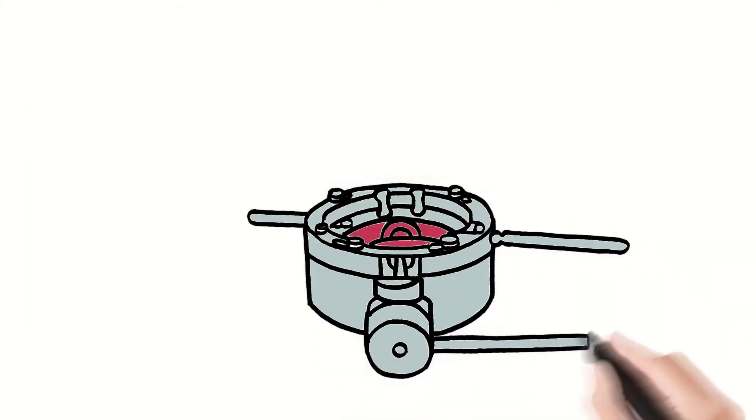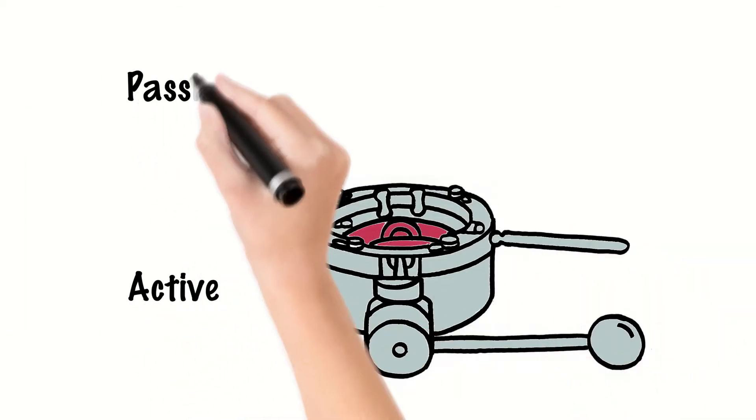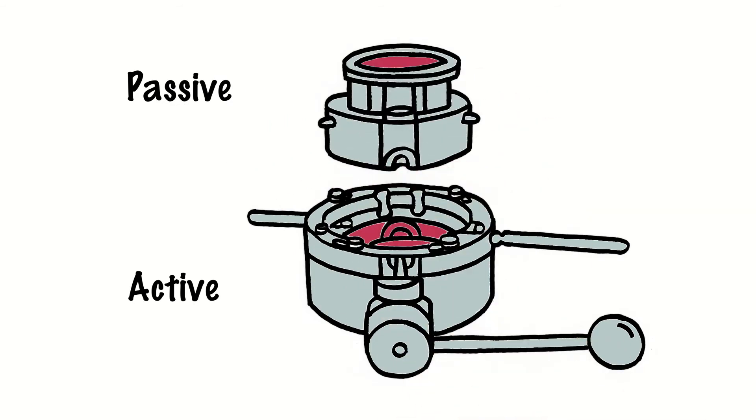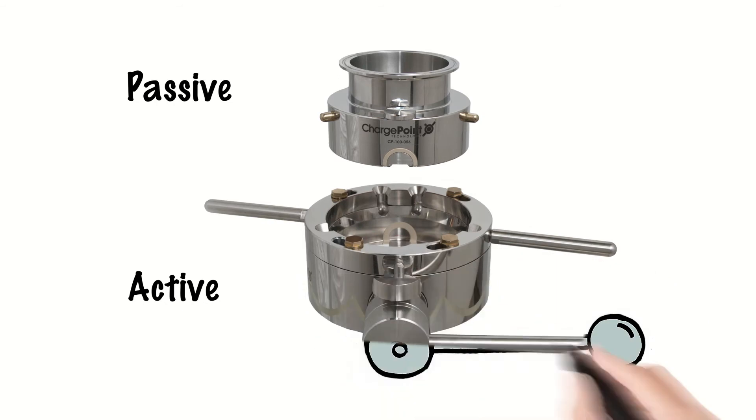PharmaSafe valves consist of two halves: the active and the passive. Each half consists of half of the butterfly disc which seals against the main body via an elastomeric seat.